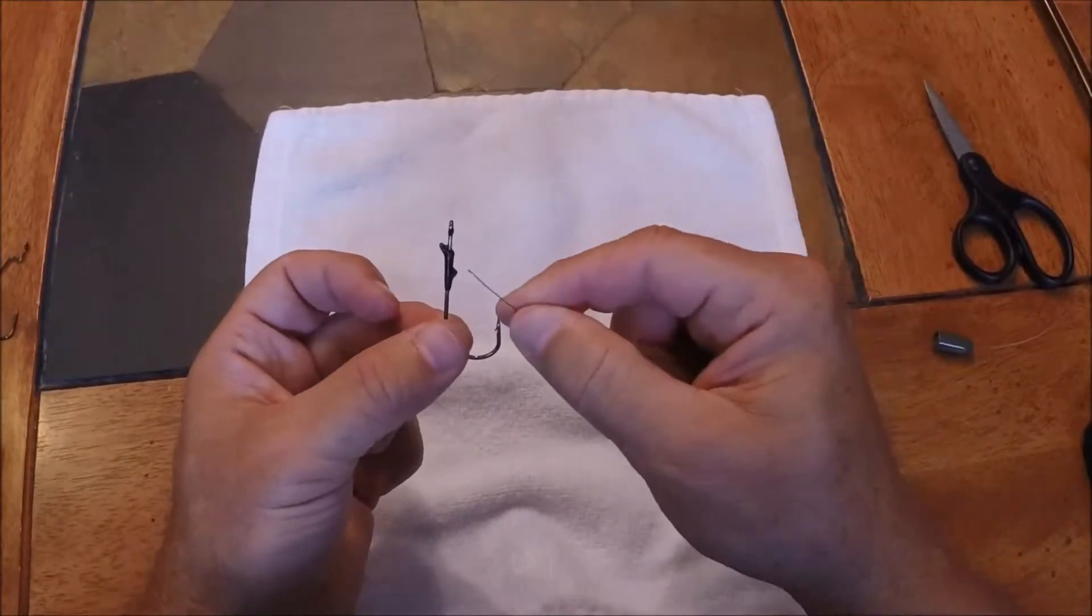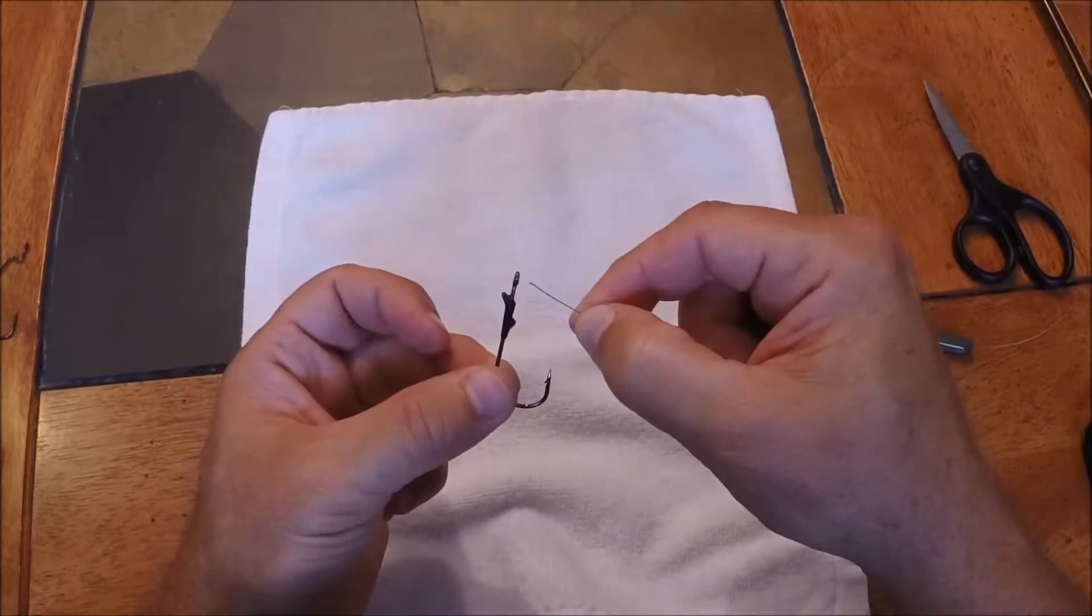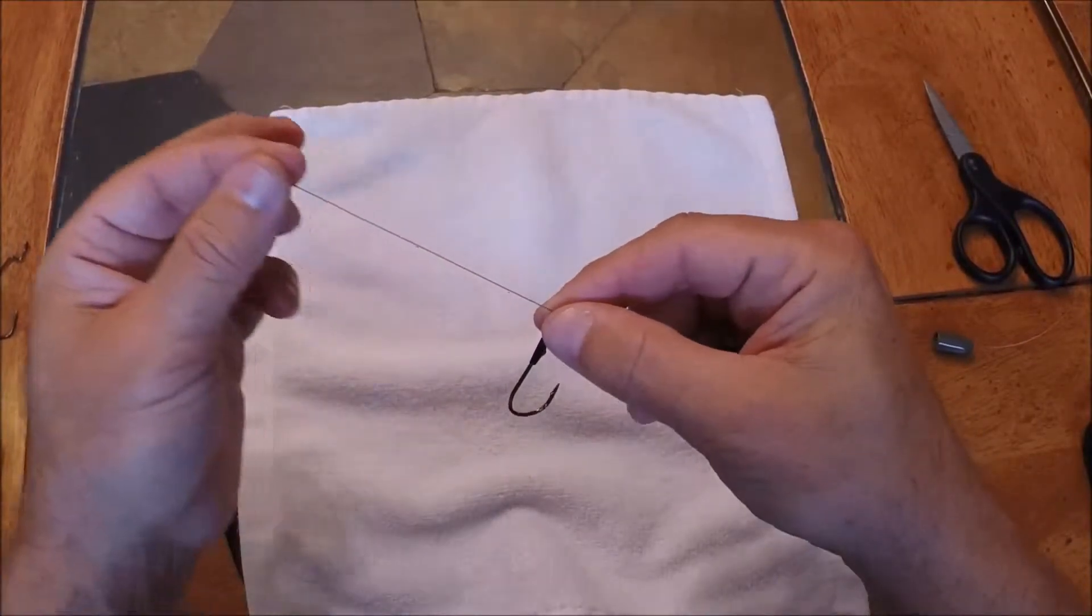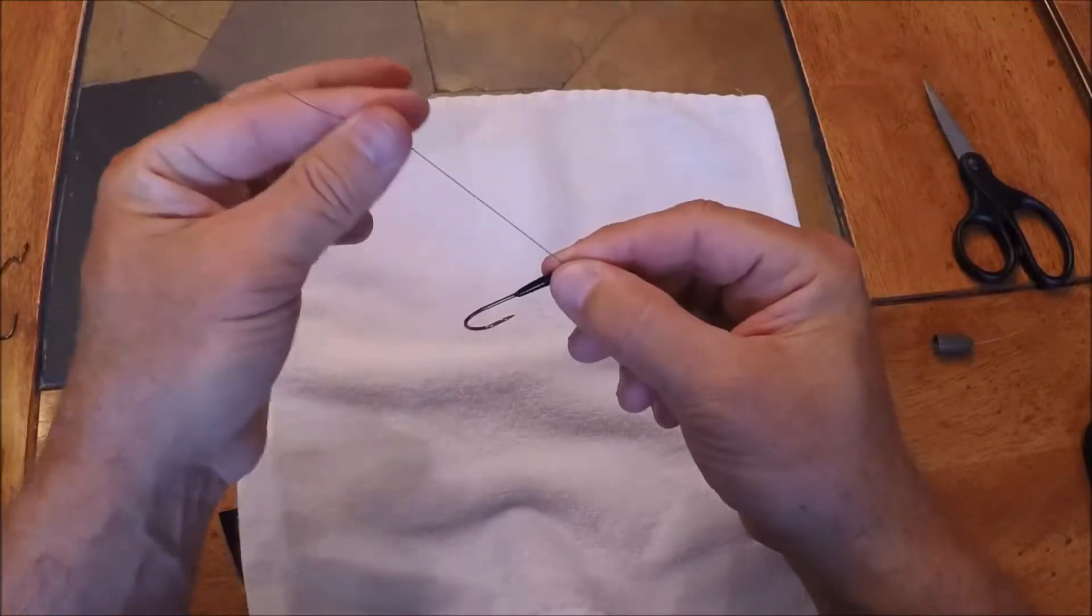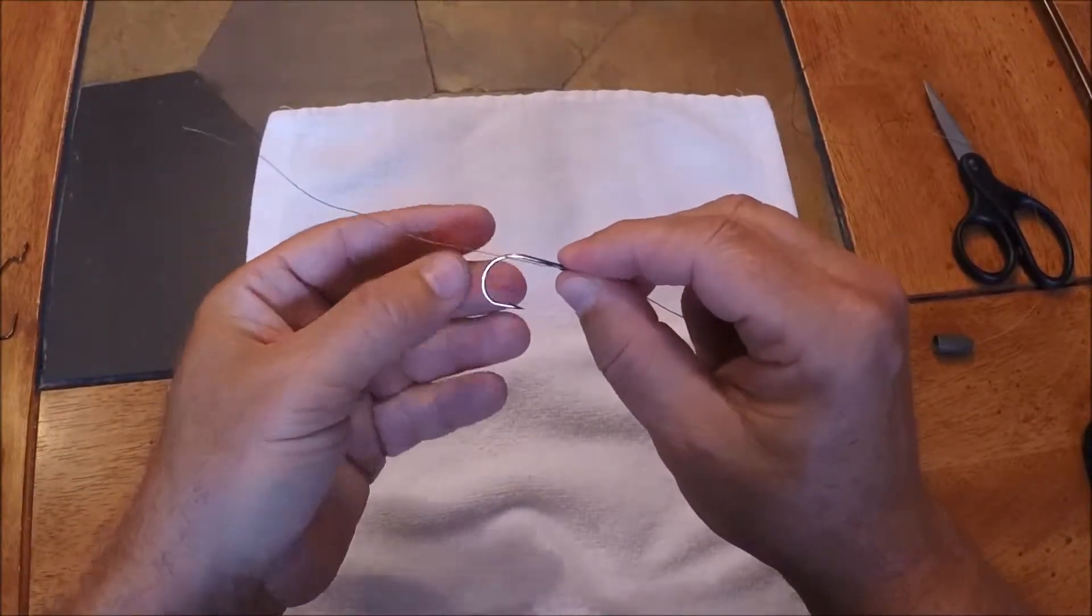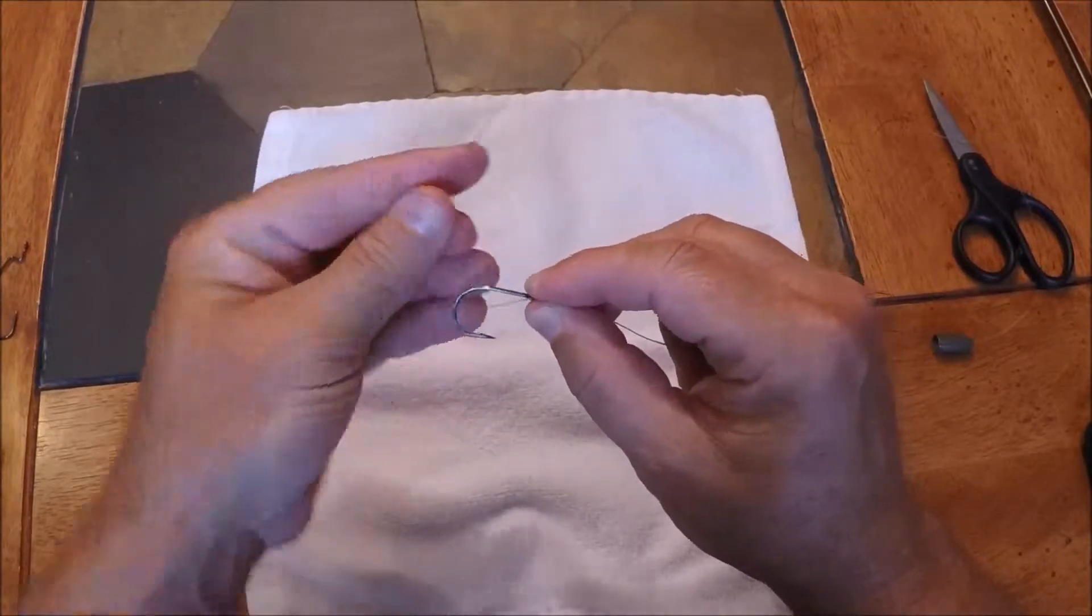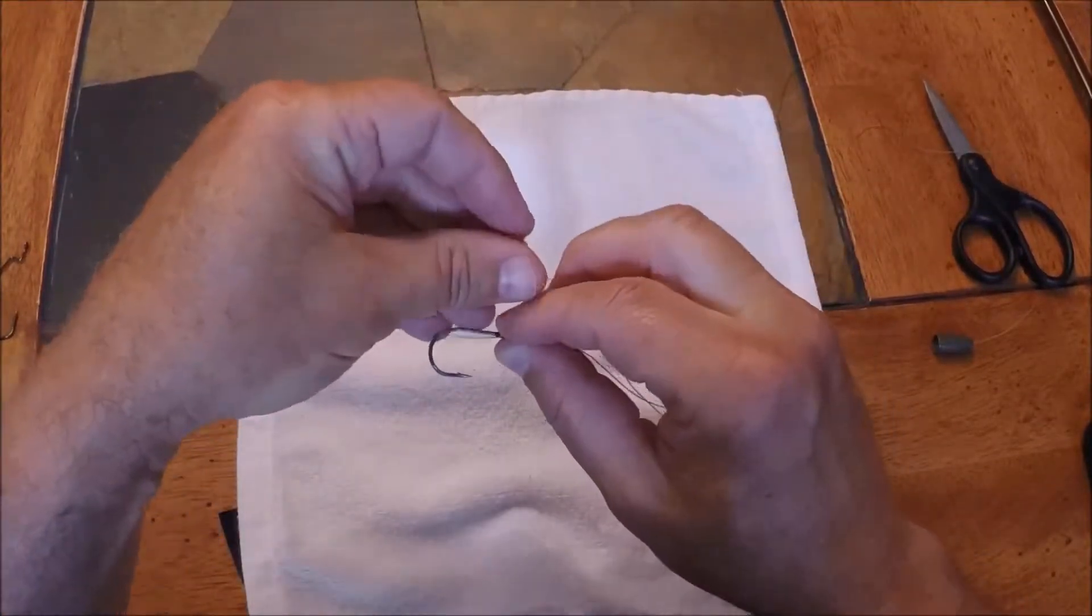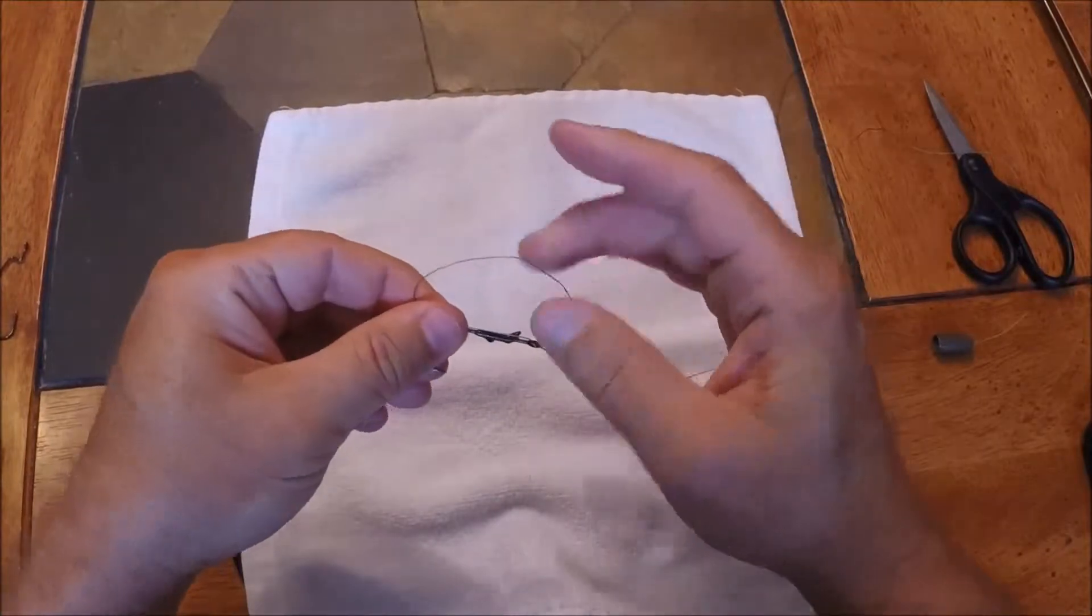To start, I'm going to start on this hook side of the hook and go through the eyelet one time. Pull out quite a bit and I'm just going to run this line right down the shank of the hook and create a big loop. It doesn't have to be too big, not as big as the Palomar loop.